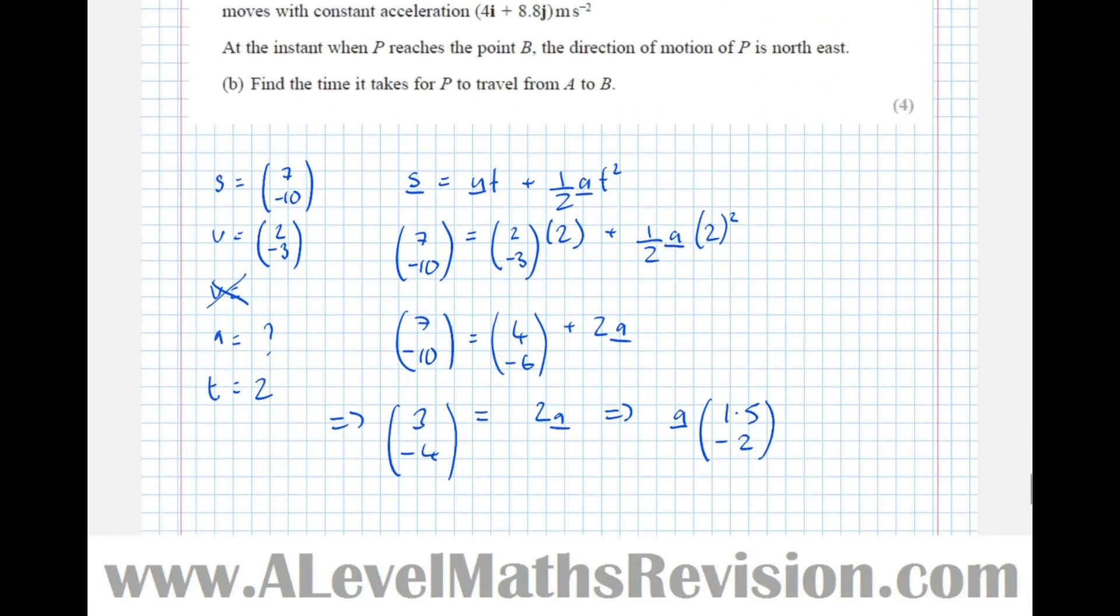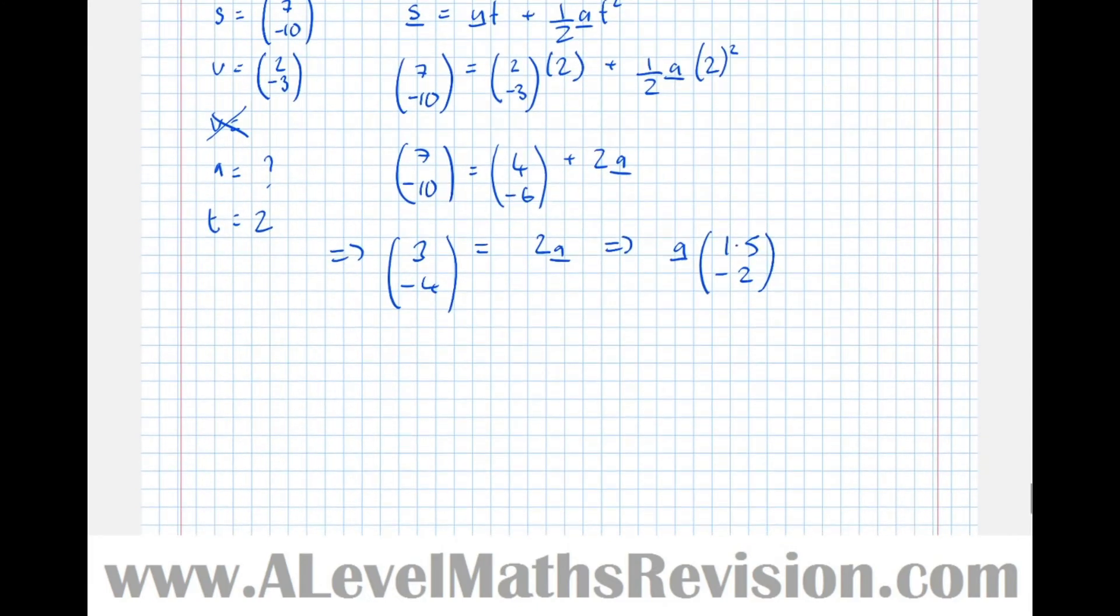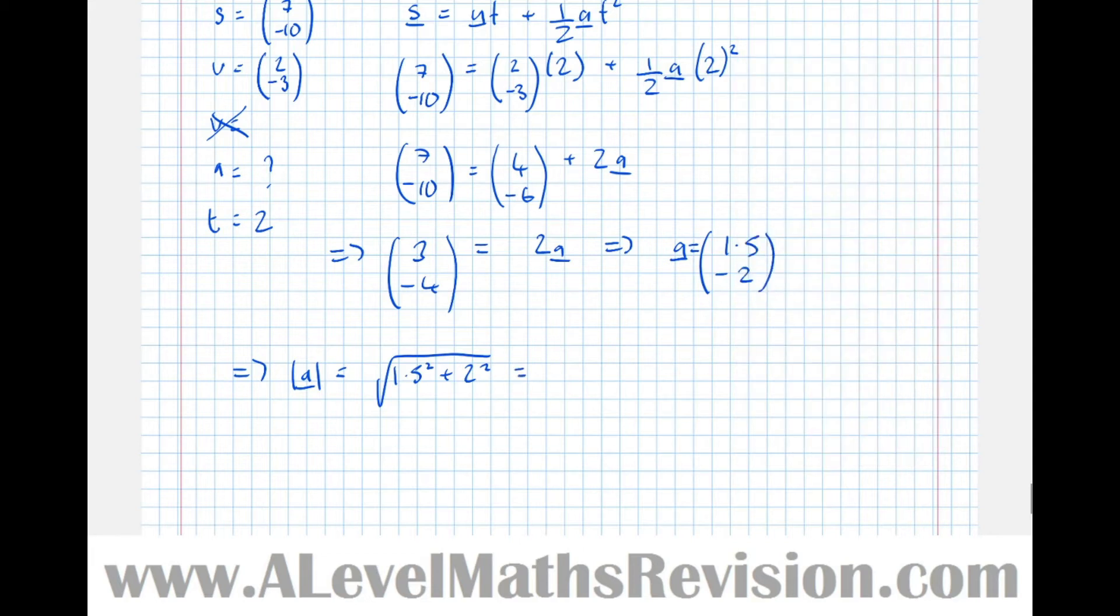It's asked us to show that the magnitude of acceleration is 2.5. So acceleration equals 1.5 minus 2, which implies that the modulus of acceleration is the square root of 1.5 squared plus 2 squared. The root of 1.5 squared plus 2 squared equals 5 over 2, which is 2.5 metres per second squared.